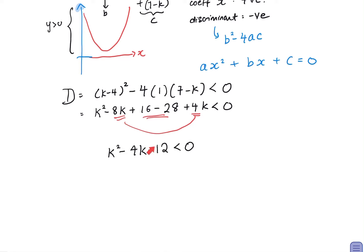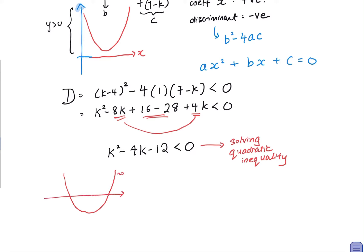From here, remember we are talking about the graph for the discriminant, not the graph for the expression itself. For the discriminant, you are solving a quadratic inequality. When solving a quadratic inequality, it is best to draw a graph. So this is the graph of y equals k squared minus 4k minus 12.